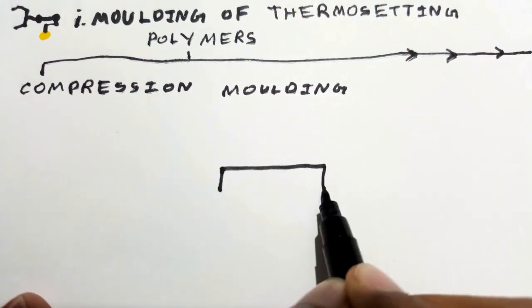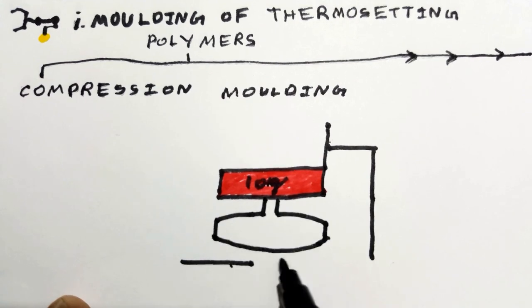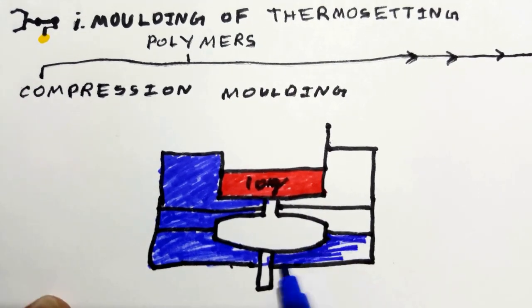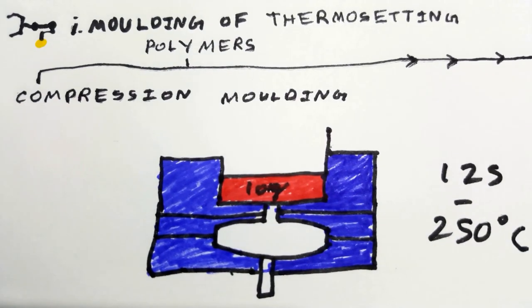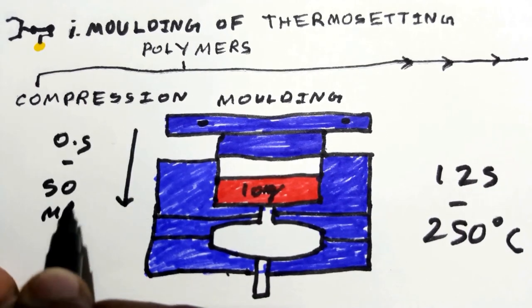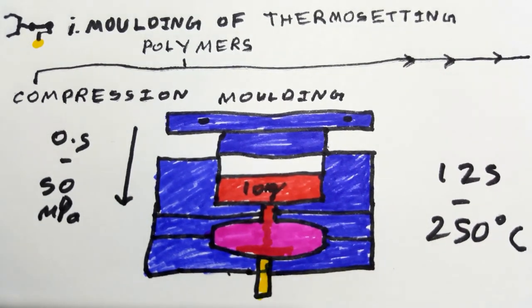One being compression moulding in which a measured amount of polymer powder is placed in a female cavity that is preheated to about 125 to 250 degree Celsius. The upper part of the die compresses the material with a pressure of 0.5 to 50 MPa. This pushes the material into the mould cavity where it solidifies and is removed with the help of ejector pins.